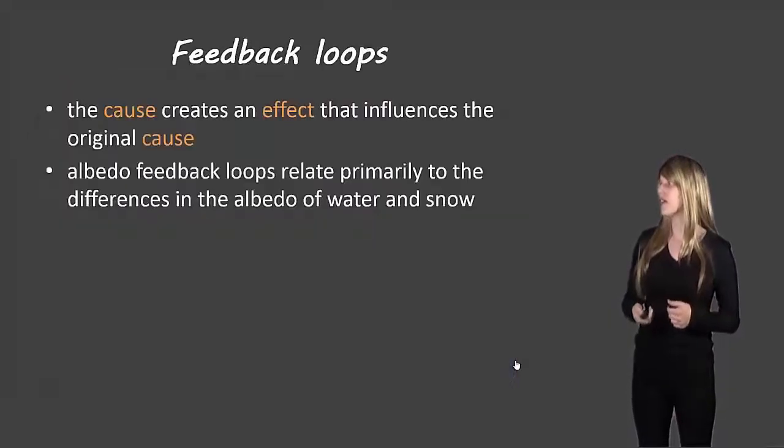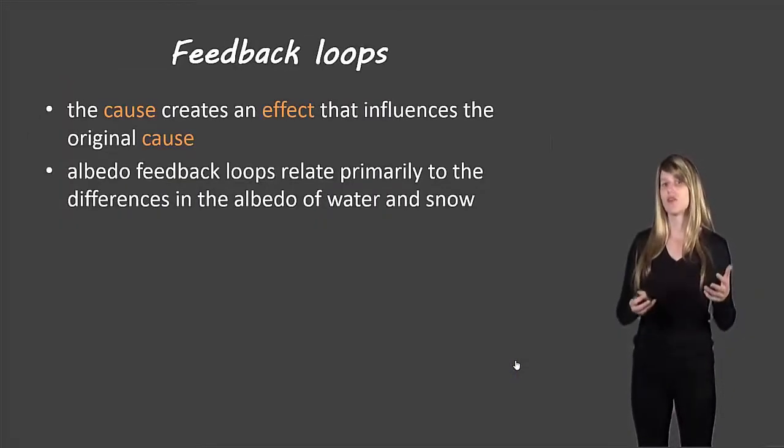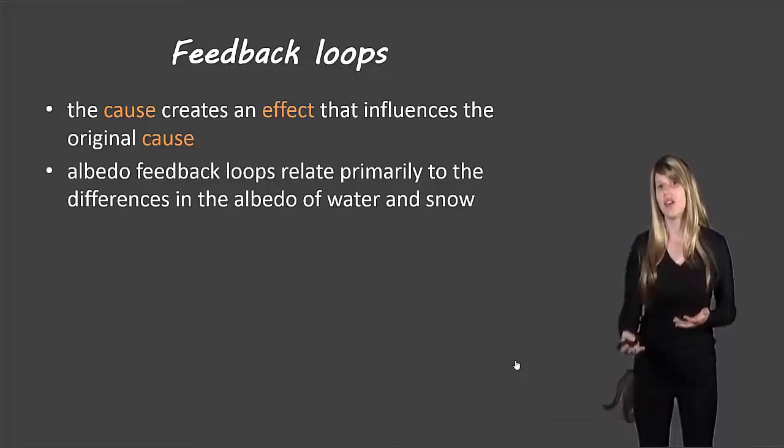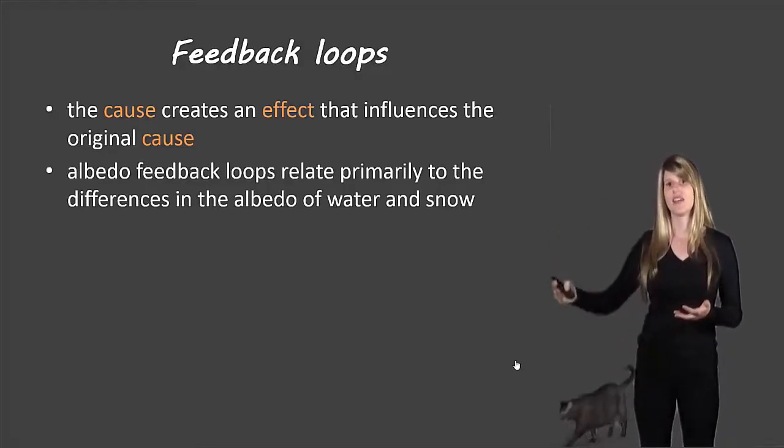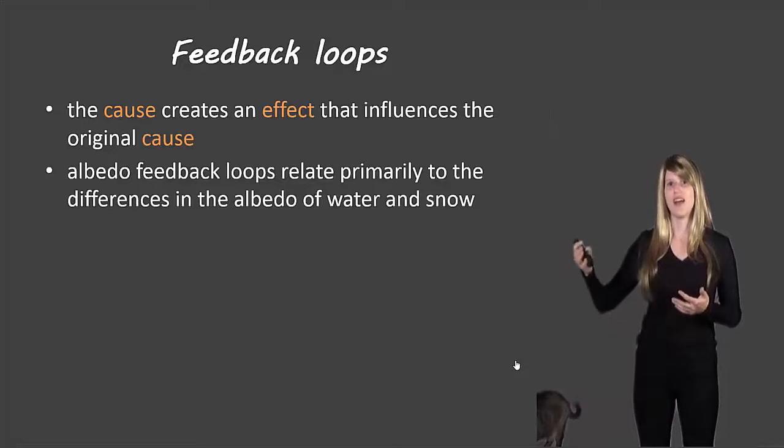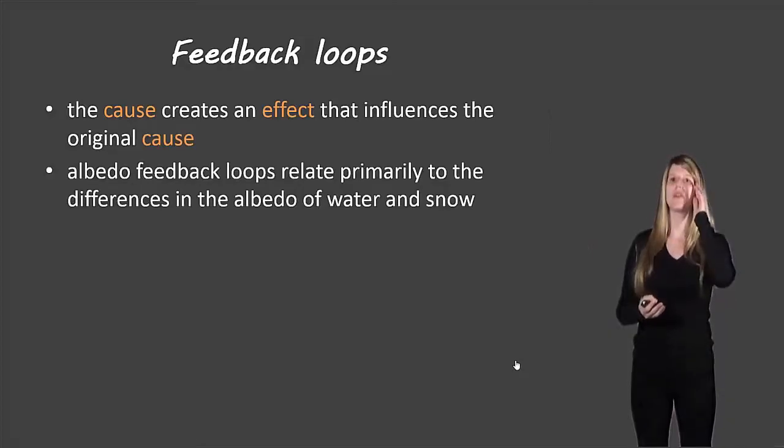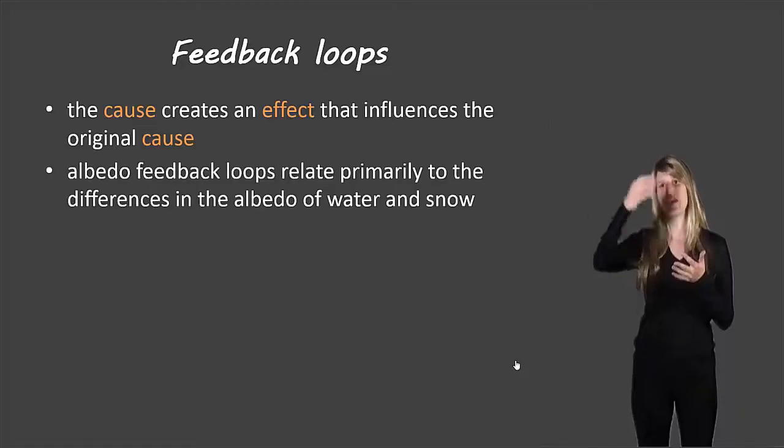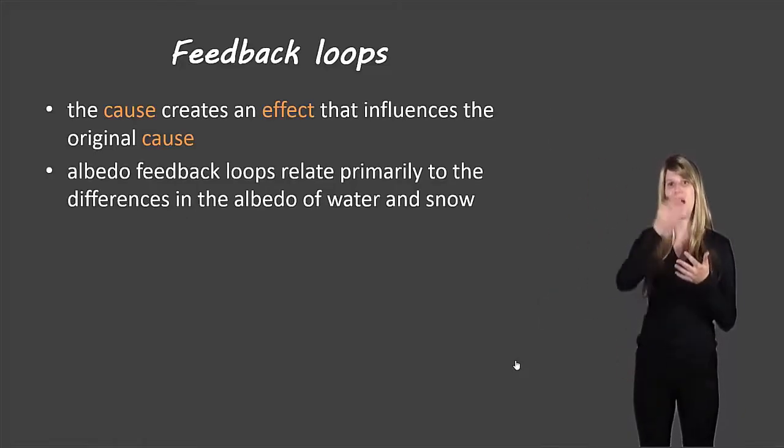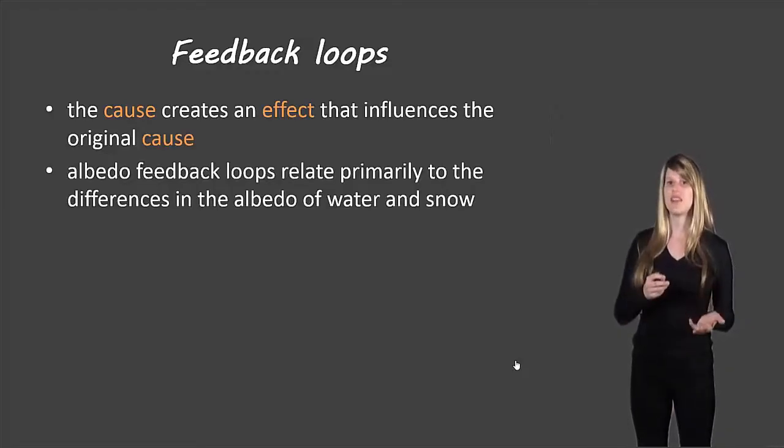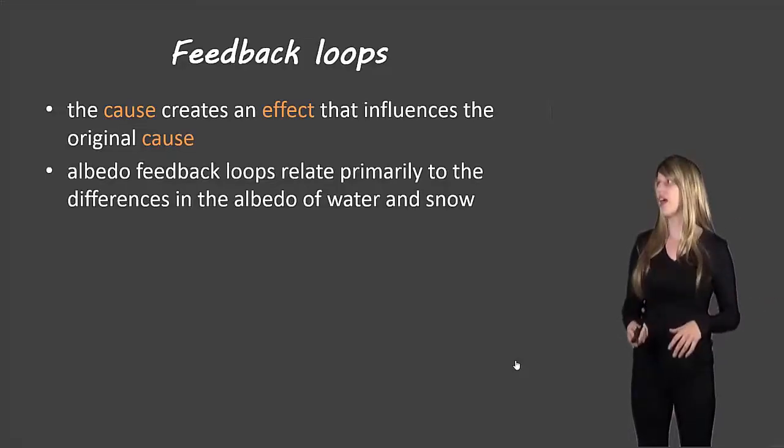When we get into these feedback loops, first of all, what is a feedback loop? Well, it's something where there's a cause that creates an effect, and that effect actually has an effect on the original cause, or it influences the original cause. So an albedo feedback loop is an example of a positive feedback loop where something happens and there's an outcome, and then that influences the original thing in a positive way to make the circle go almost like a spiral around and around again. Albedo feedback loops relate primarily to the differences in the albedo of water and snow, like we saw on that last slide.